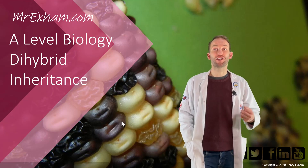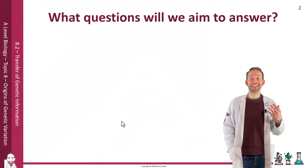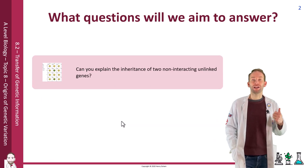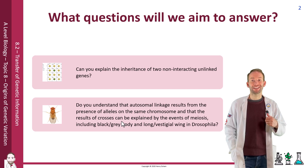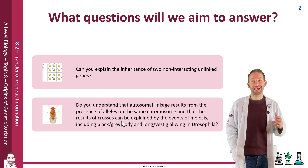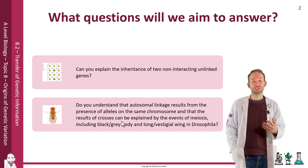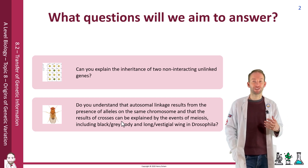This lesson is all about dihybrid inheritance. You're going to need to explain the inheritance of two non-interacting unlinked genes, but also to understand that autosomal linkage results from the presence of alleles on the same chromosomes, and that the results of crosses can be explained by the events of meiosis, including black and grey body and long vestigial wings in Drosophila as an example.